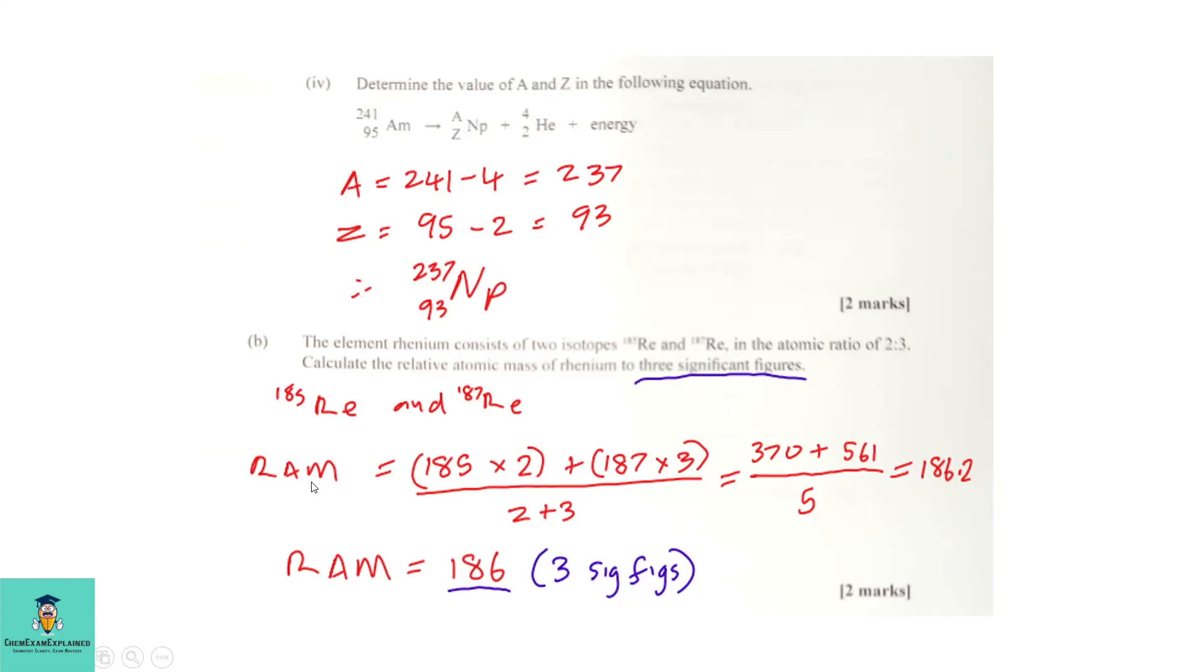So, the relative atomic mass is equal to 185 times 2, plus 187 times 3, divided by the total ratio of 2 plus 3, which gives you 5. It works out to be 370 plus 561, divided by 5, which is equal to 186.2. But the answer requires you to put it to three significant figures. So the final answer is 186 to three significant figures.